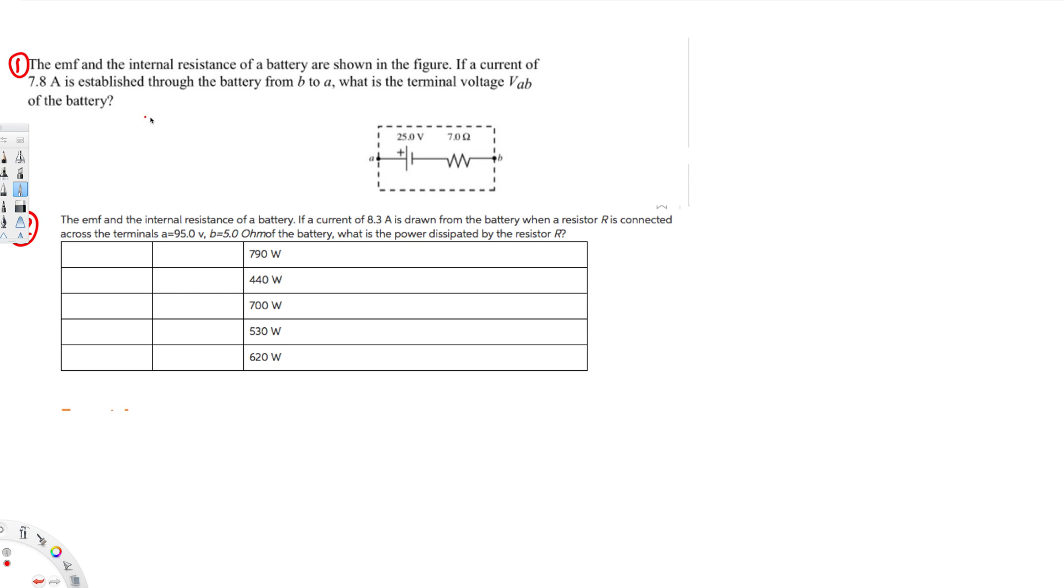Right, so if the current is going from B to A, there's going to be a voltage drop right here at 7 ohm. Let's calculate that voltage drop and then determine the vab.